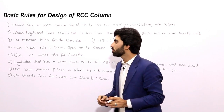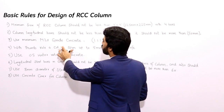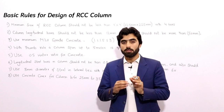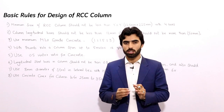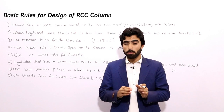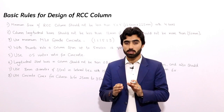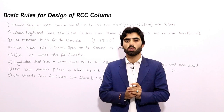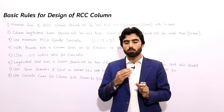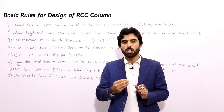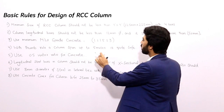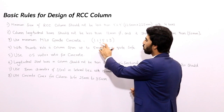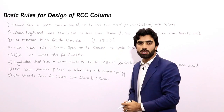The third rule: use minimum M20 grade concrete. Many people use M15 grade concrete in RCC columns, but the basic rule is to use minimum M20 grade concrete. The mix ratio for M20 is 1:1.5:3, where 1 is cement, 1.5 is sand, and 3 is crushed aggregate.